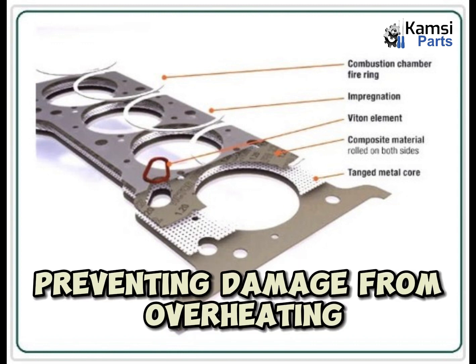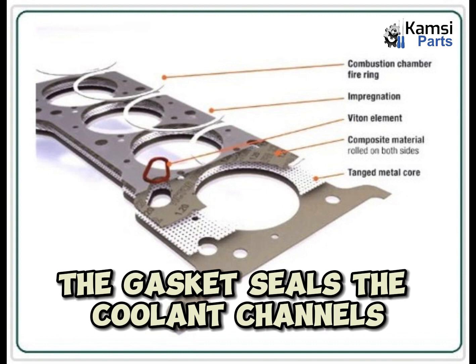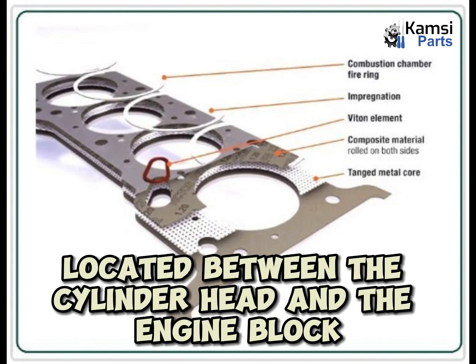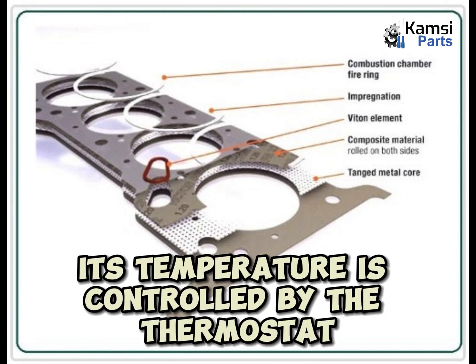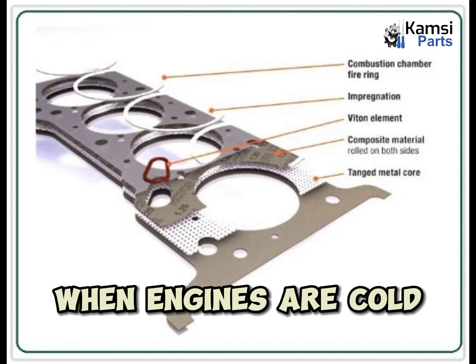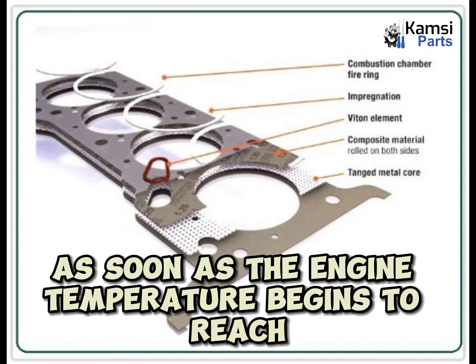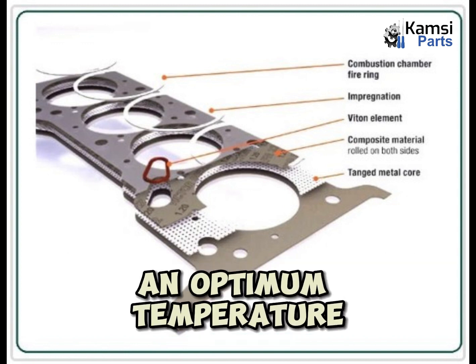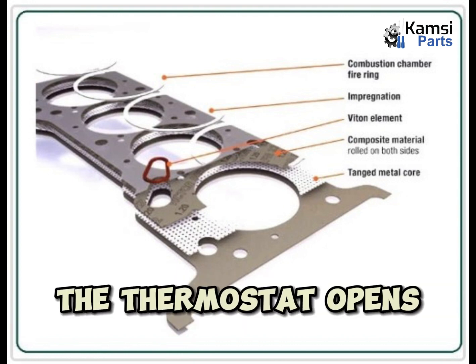Preventing damage from overheating: the gasket seals the coolant channels located between the cylinder head and the engine block. For any car, its temperature is controlled by the thermostat. When engines are cold, no coolant flows out of them. As soon as the engine temperature begins to reach an optimum temperature of about 200 degrees, the thermostat opens.